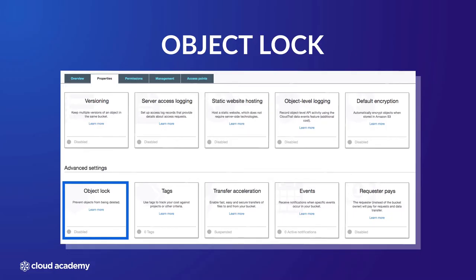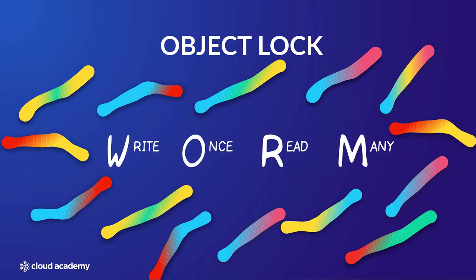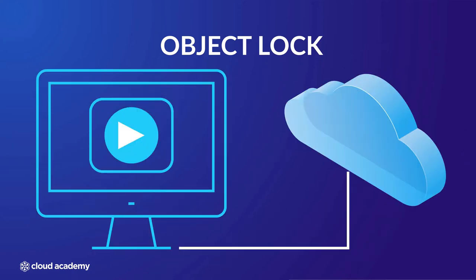Welcome to this lecture looking at the object lock property, which is considered an advanced property of an S3 bucket. This feature is often used to meet a level of compliance known as WORM, meaning write once read many. It allows you to offer a level of protection against your objects in your bucket and prevents them from being deleted, either for a set period of time or alternatively until the end of time. The ability to add retention periods using object lock helps S3 to comply with regulations such as FINRA, the Financial Industry Regulatory Authority.